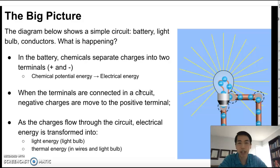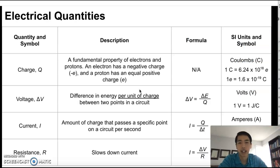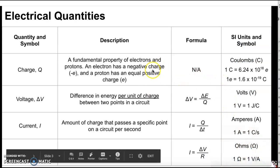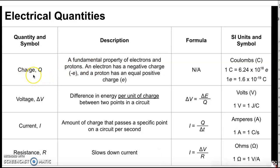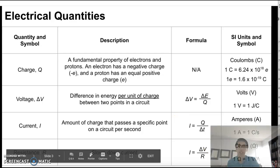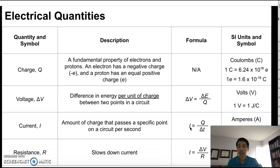Now how do we describe all of this with numbers? That's the purpose of this lesson. I'll start by talking about charge. Charge has the symbol Q. It's simply a fundamental property of electrons and protons — protons have a positive charge, electrons have a negative charge. They are equal in magnitude and opposite in sign.